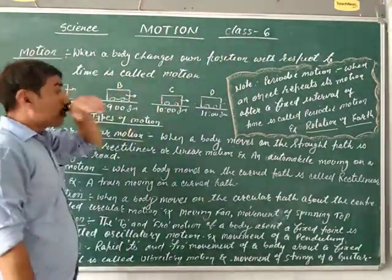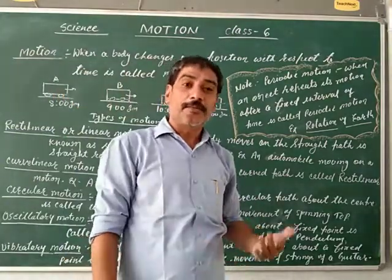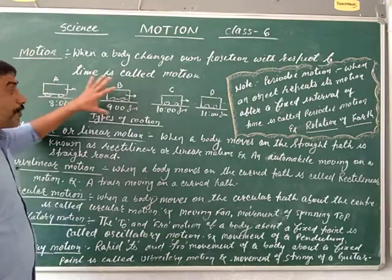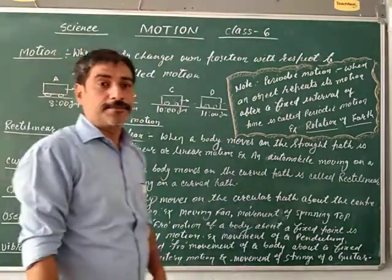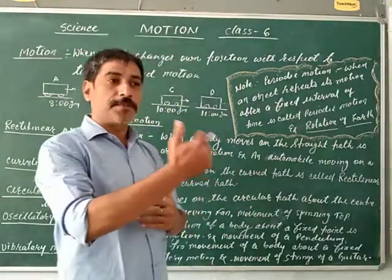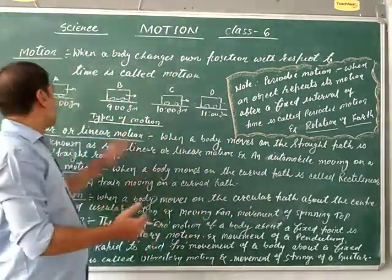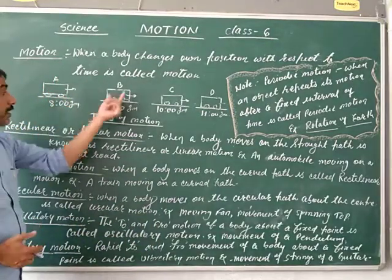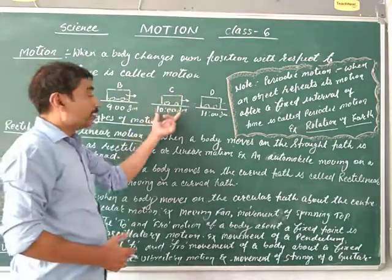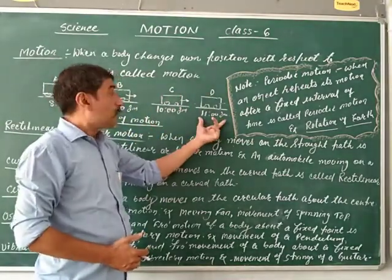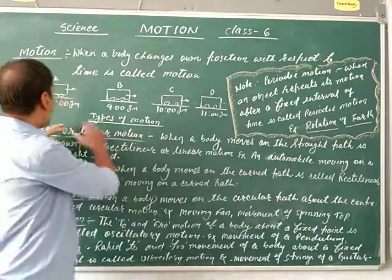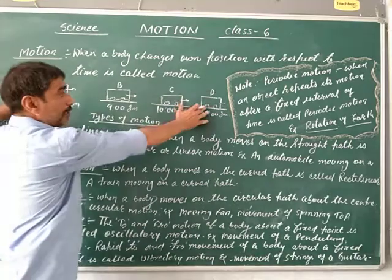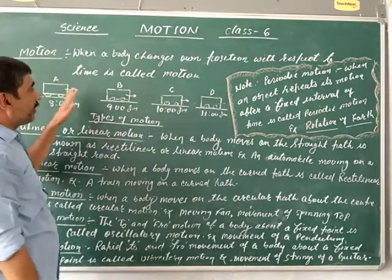Motion. First of all, what is rest and what is motion? Suppose when the body changes its position with respect to time — suppose this is the car at position A at 8 o'clock, B at 9 o'clock, C at 10 o'clock, B at 11 o'clock. So we can say that at regular time intervals, the car changes its position. So we can say that the car is in motion.